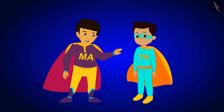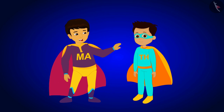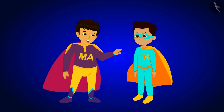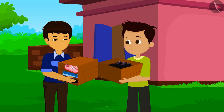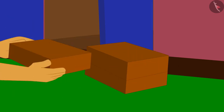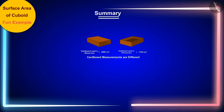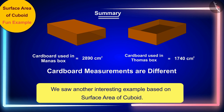Now understanding the concept, the two children quickly return to making their boxes and pack Thomas's scattered shoes before his mother returns. Together they made more boxes. In this video we saw another interesting example based on the surface area of a cuboid, and hopefully you now have a good understanding of it.